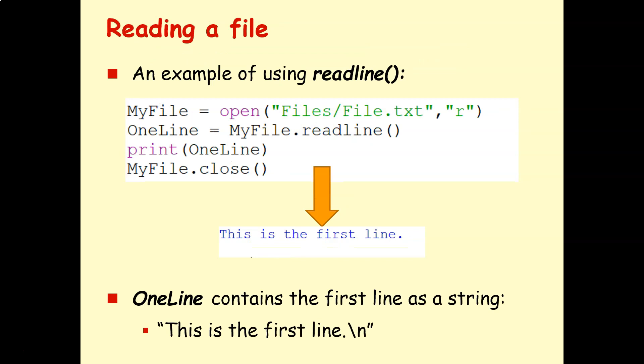Read line takes it one line at a time, takes that line and stores it as a string. So here I've said one line equals my file dot read line, print one line. And you can see here, it's just giving me that first line of text, nothing else. Note it's also going to have that new line character at the end there. So you're going to end up with this kind of empty blank line that you can remove using the end parameter if you want.